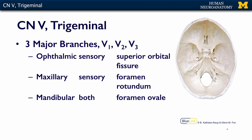The ophthalmic branch is sensory — all of it's sensory — and it exits the skull via the superior orbital fissure, which is this area here. The maxillary branch of the trigeminal nerve exits via the foramen rotundum, which is very difficult to see on this image. The mandibular division exits the skull through the foramen ovale here, and it is both motor and sensory.